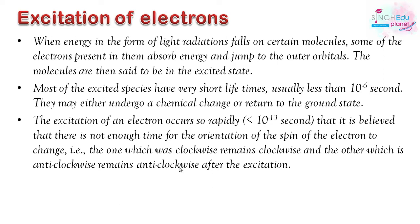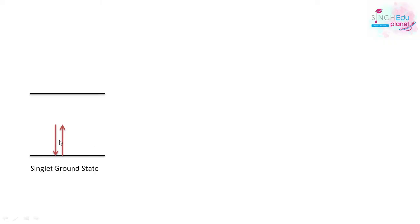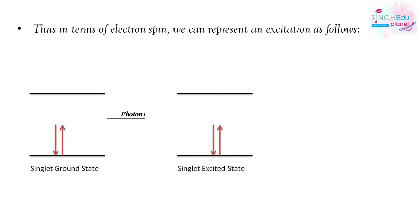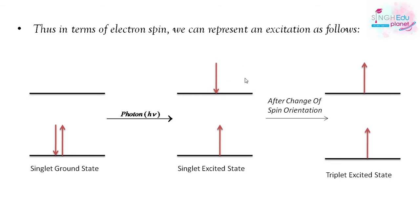Looking at the diagram — here is the ground state. Let me explain how the singlet ground state is named. When a molecule absorbs a photon, if one of a pair of electrons had anti-clockwise spin, it will remain anti-clockwise after excitation. If instead we change this spin orientation, it will become clockwise — meaning the spin orientation has changed.